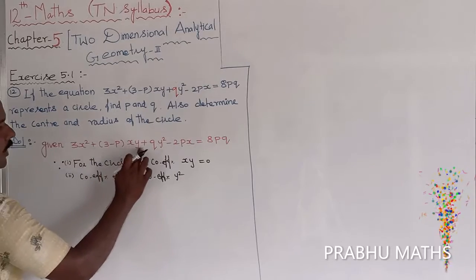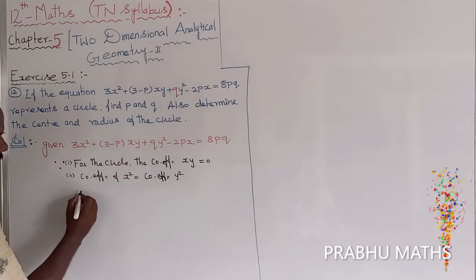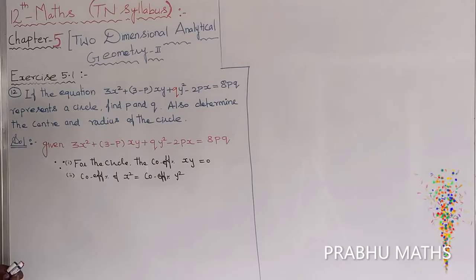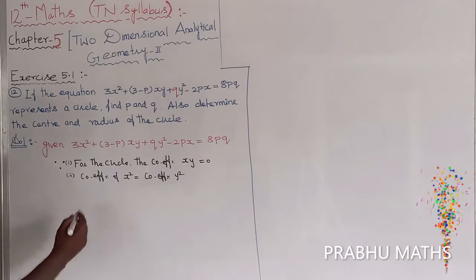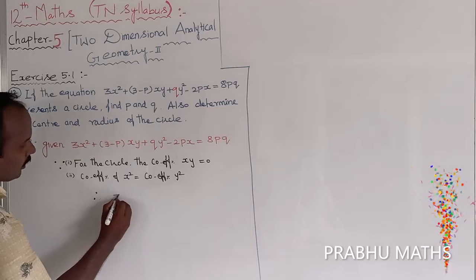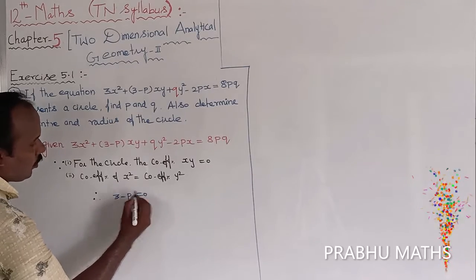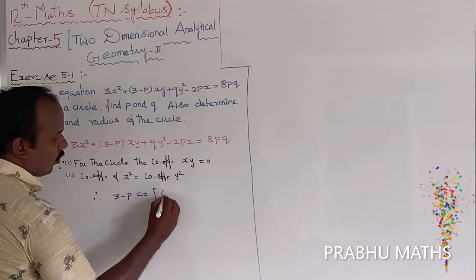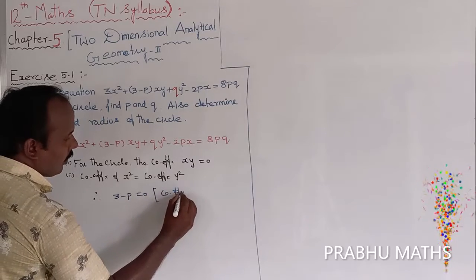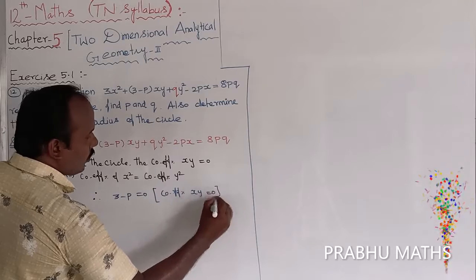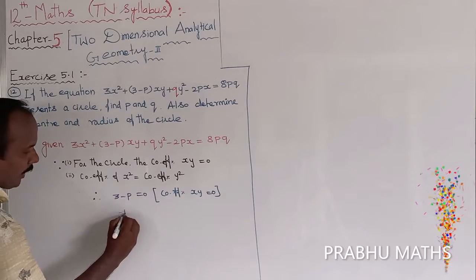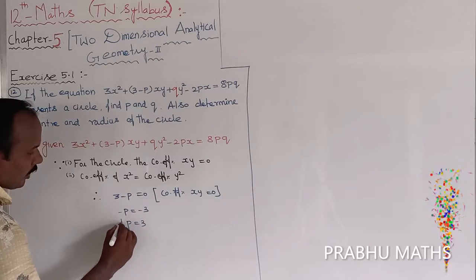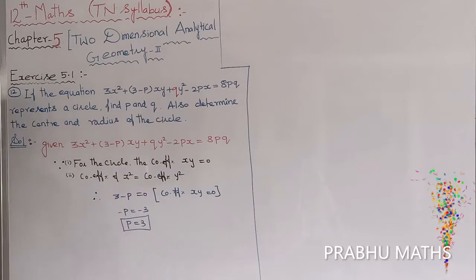Applying Property 1, the coefficient of xy equals 0. Therefore, 3 minus p equals 0, which gives minus p equals minus 3, and so p equals 3. The value of p is now determined.